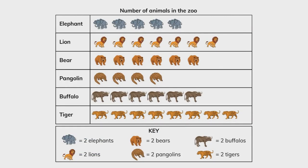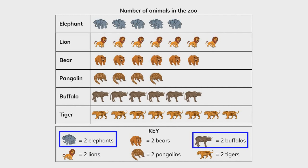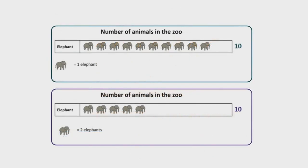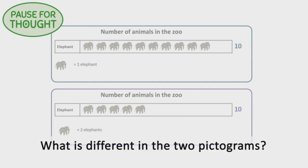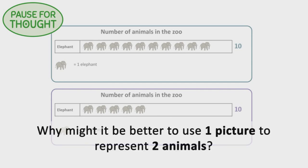The pictogram can also be drawn like this. Here, the key tells you that one picture represents two animals. Here is the first row of each pictogram. The total numbers are the same in both pictograms. What else is the same? Why might it be better to use one picture to represent two animals?